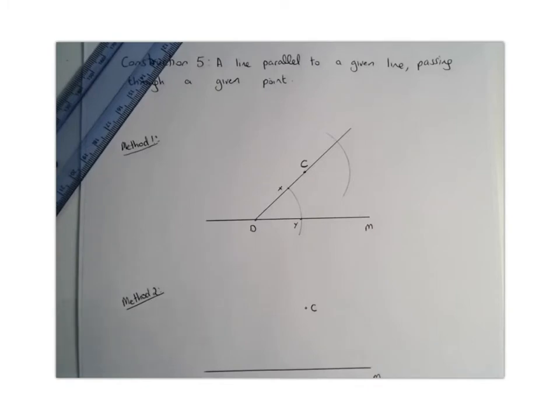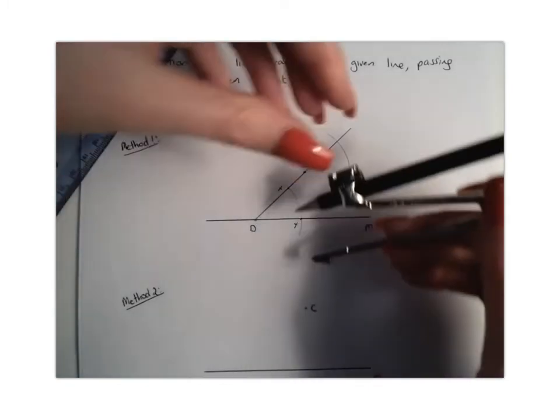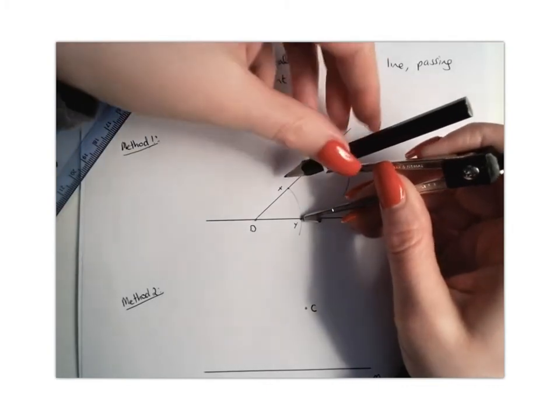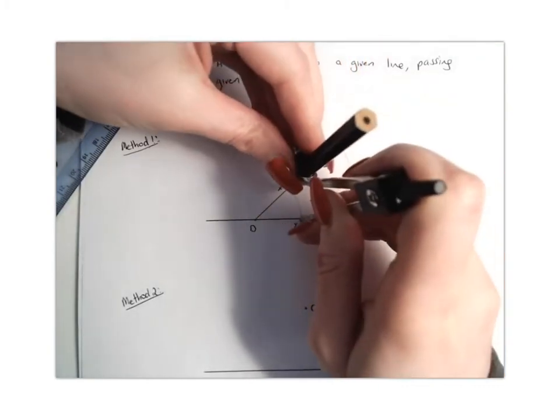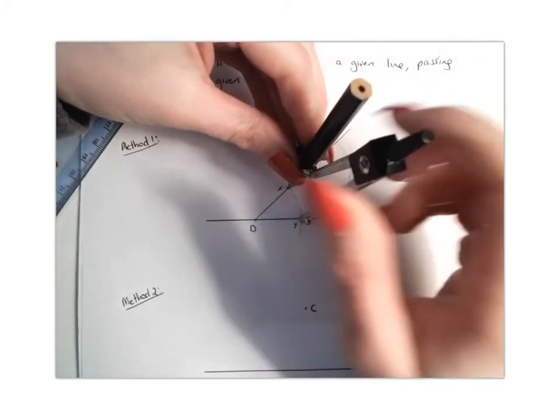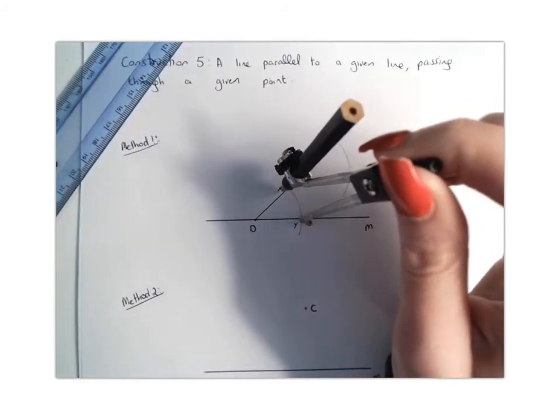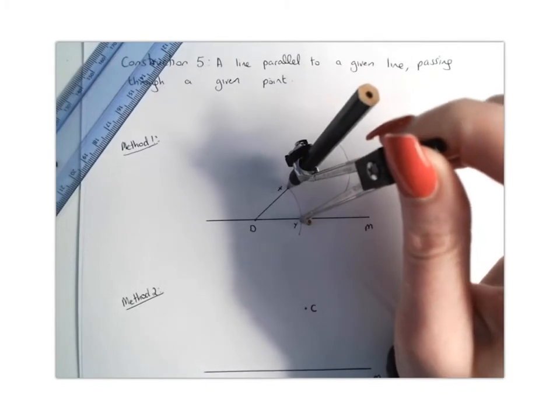And then what I'm going to do is I'm going to go down to X and Y, and I'm going to fix my compass width now to be the width between X and Y. So I'm just going to line it up there so that that is the correct width. I'm going to use the compass to measure the arc between X and Y.